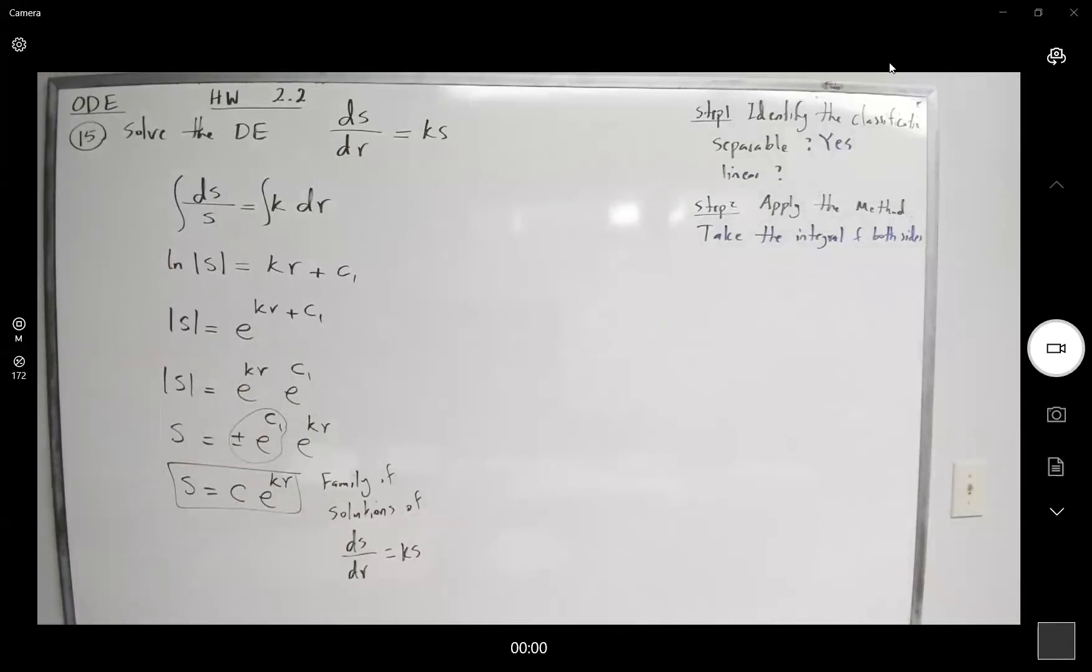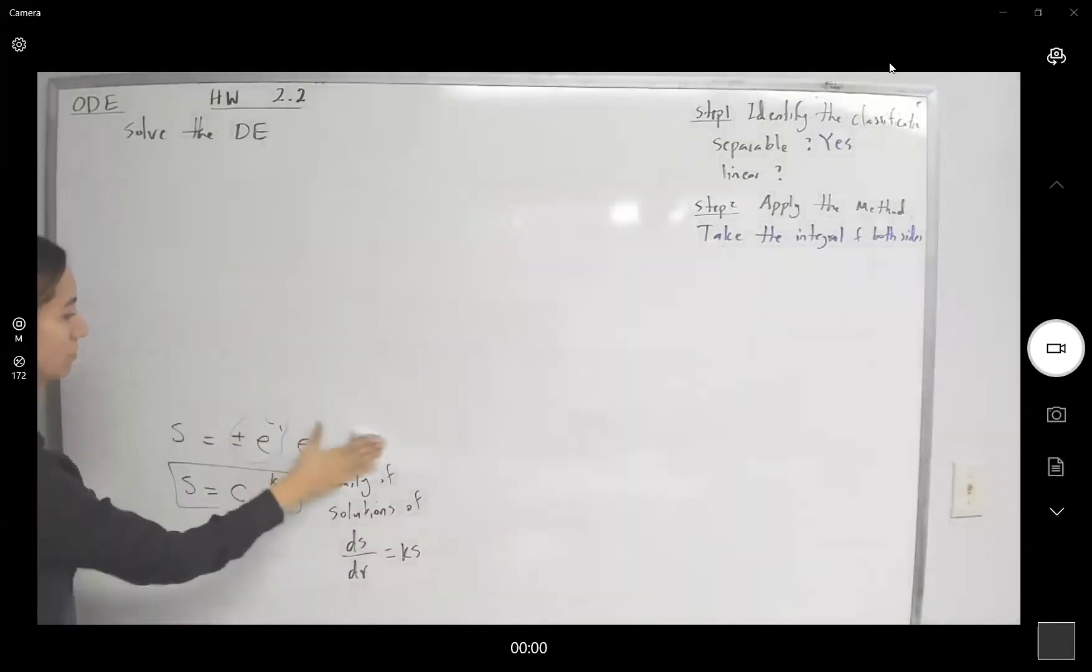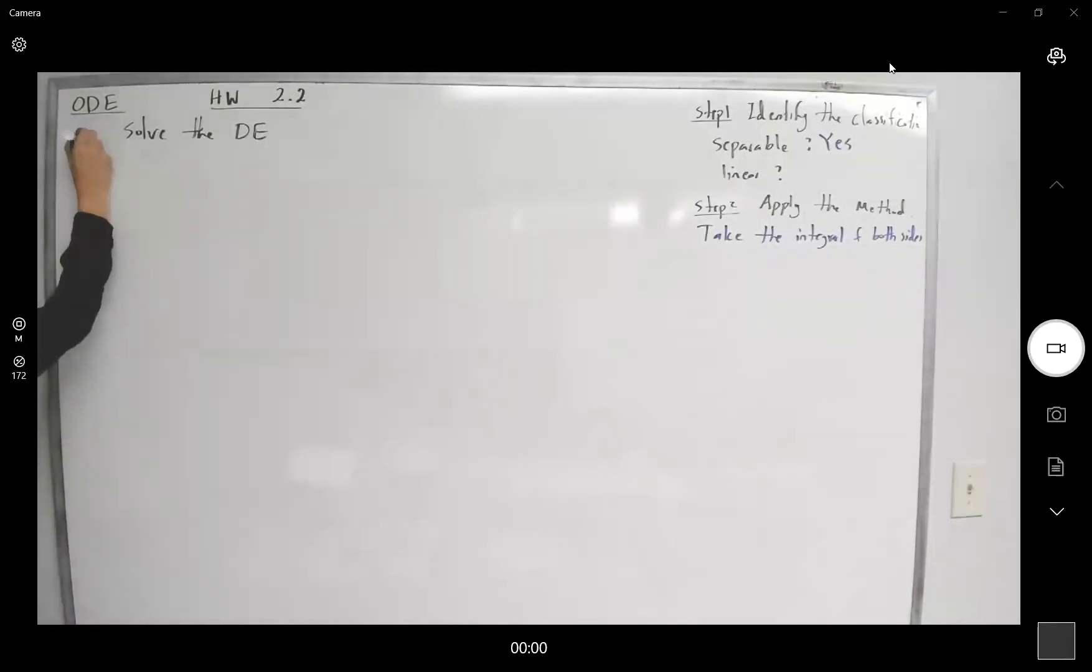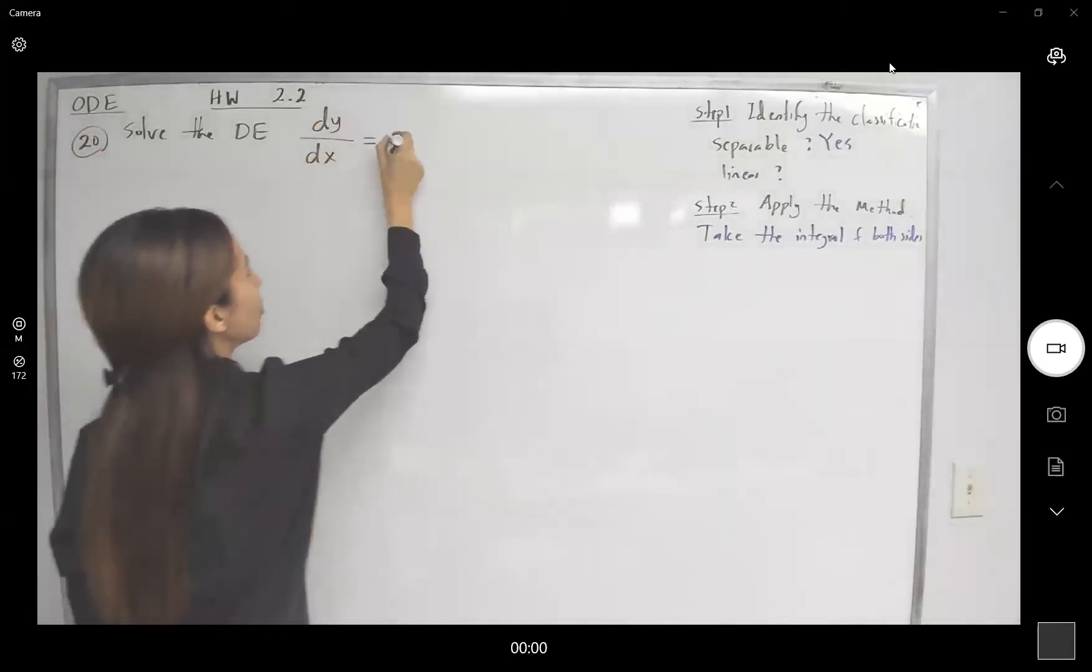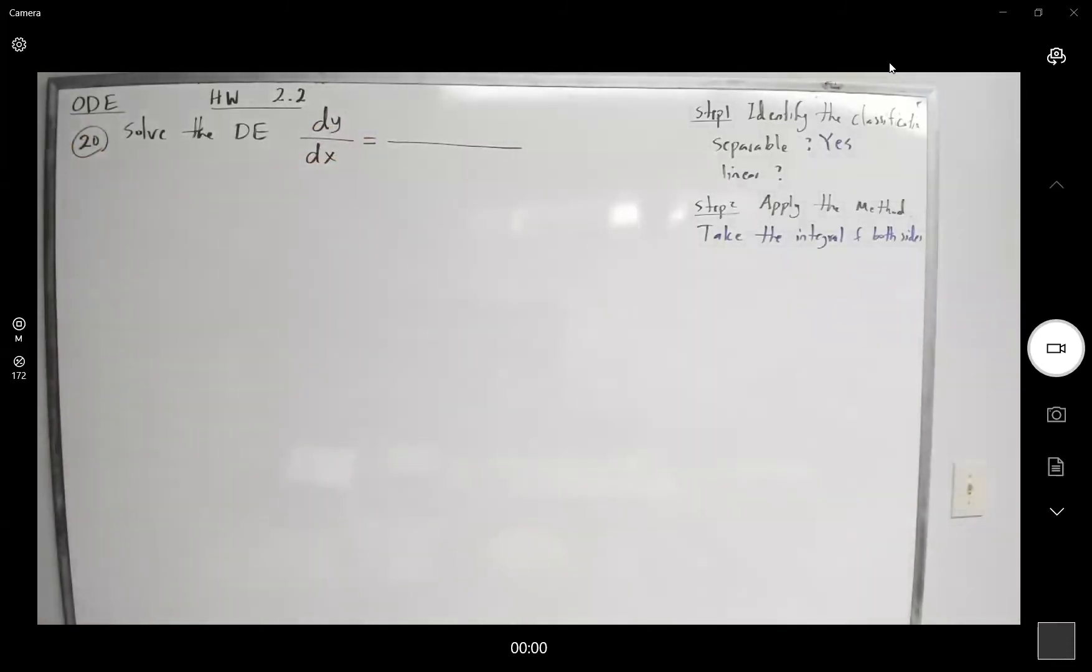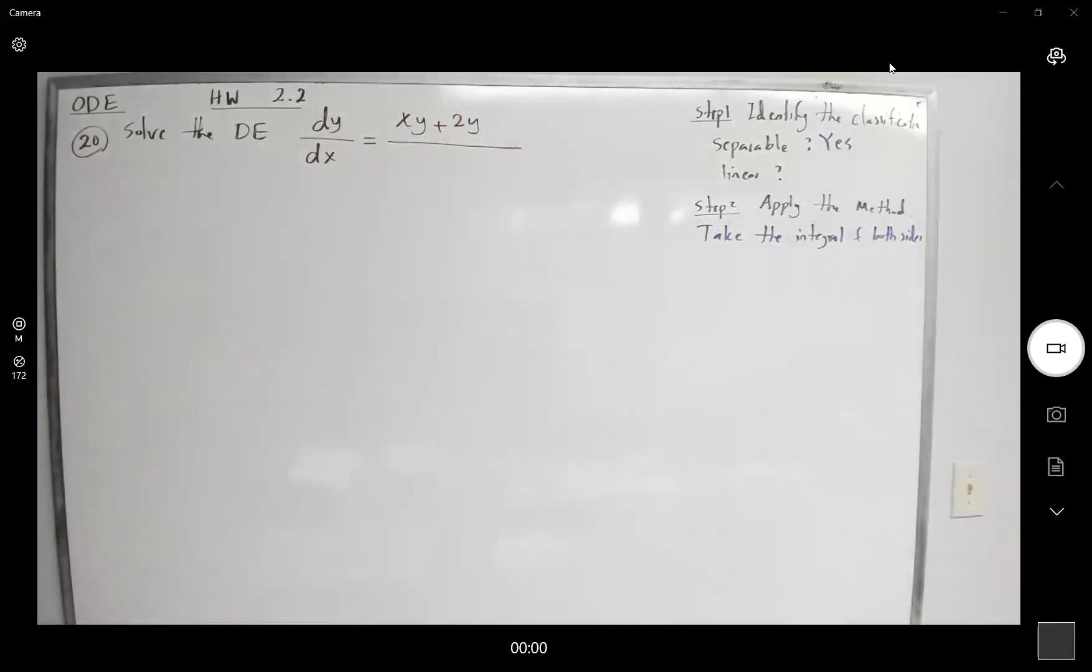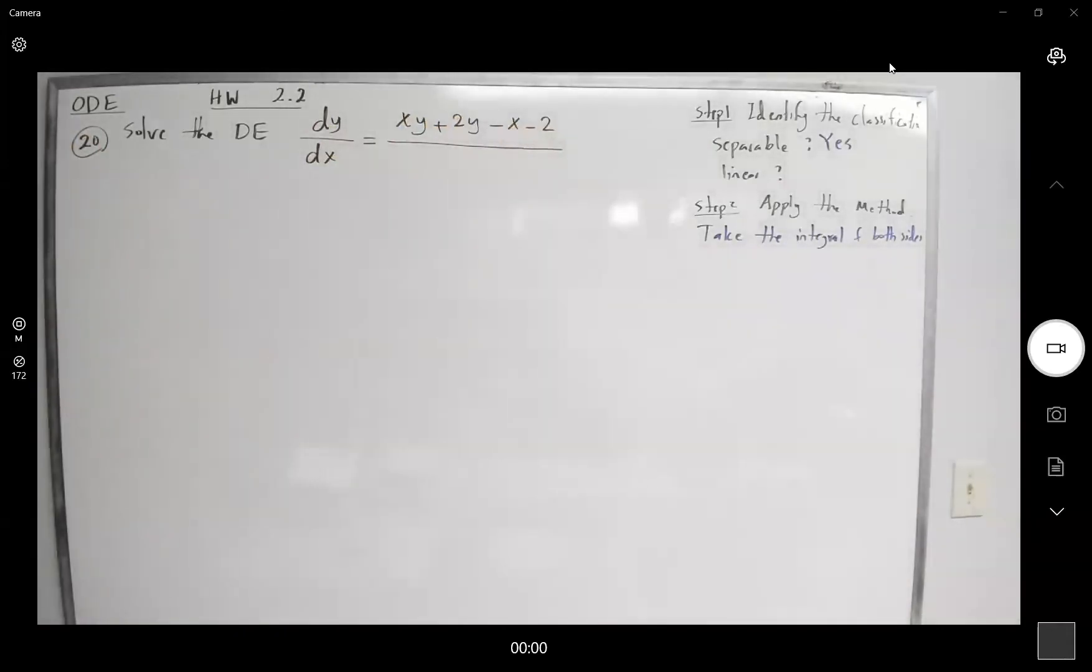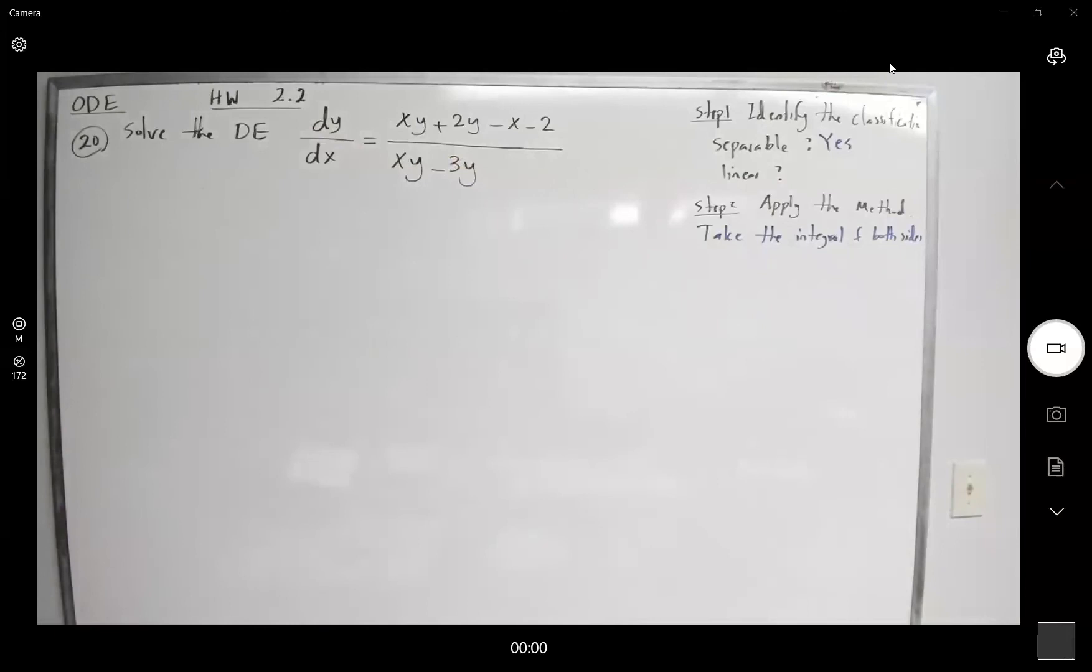Question 20 says solve the differential equation. The given differential equation is dy over dx equals to xy plus 2y minus x minus 2 divided by xy minus 3y plus x minus 3.